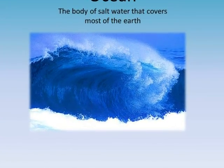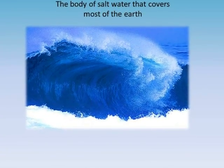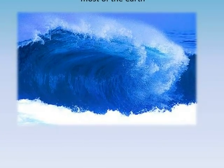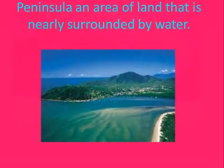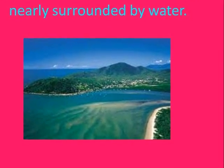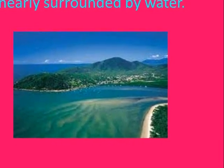The ocean is the body of salt water that covers most of the earth. A peninsula is an area of land that is narrowly surrounded by water on most sides.